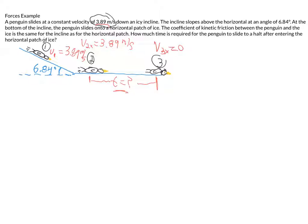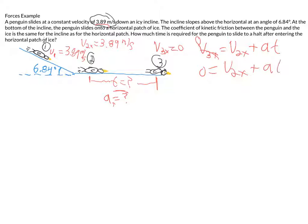That immediately makes me think of an equation of motion: the velocity at point three equals the velocity at point two plus acceleration times time. We know both velocities, so zero equals v₂ plus a·t, which gives us time equals negative v₂ over acceleration. But we don't know the acceleration — so if we can figure out what that acceleration is on the horizontal, we should be able to solve.